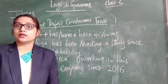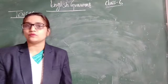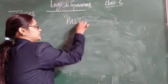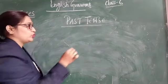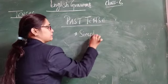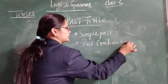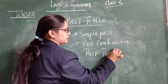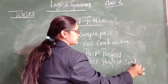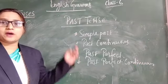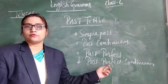Now let us start the next tense, that is past tense. Here we have completed the four forms of present tense with examples. The next tense is past tense. Past tense also has four forms: first is simple past, second is past continuous, third is past perfect, and fourth is past perfect continuous.